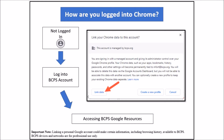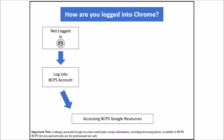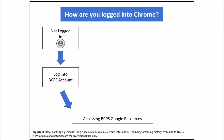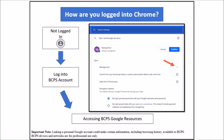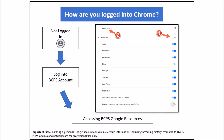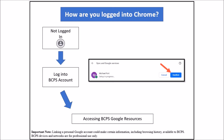Click link data to acknowledge that BCPS has control of the data in the account. Then click the settings button. Be careful — selecting yes I'm in shares all of your information by default. Click the manage sync arrow and use the toggles to manage which information you want shared. When finished, click confirm to complete the setup.